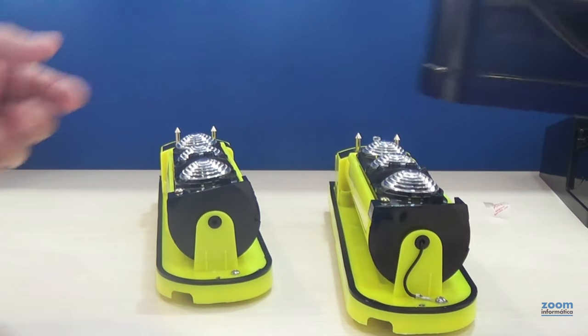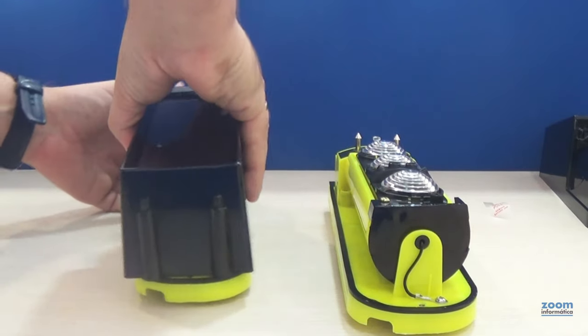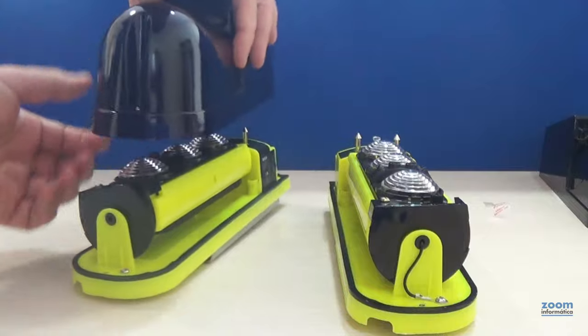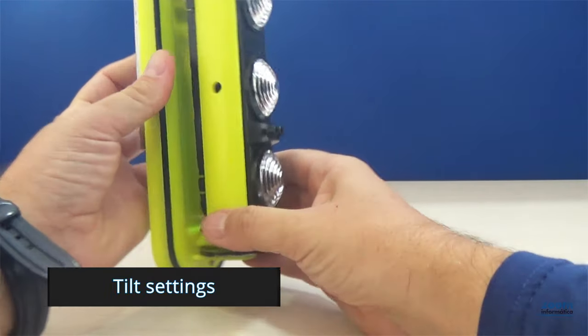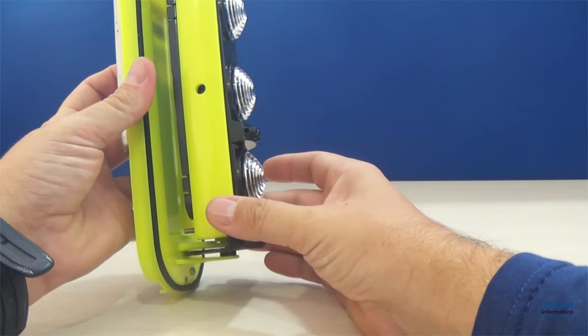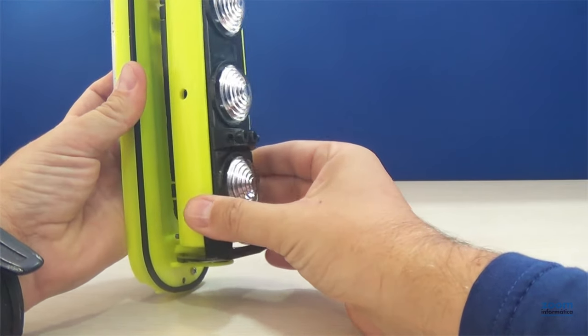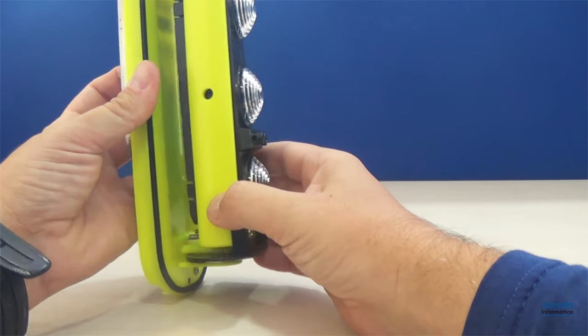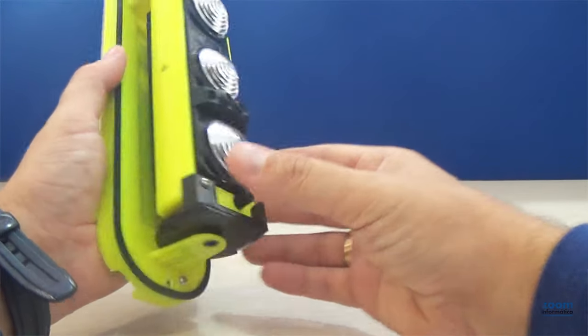We're going to close them to avoid the tamper activating the alarm. Before testing the beams, we're going to explain the adjustments for the detector. As we've mentioned, both parts must be facing each other, but from each barrier you can adjust a small horizontal angle of rotation and also vertically, as we will now show you.